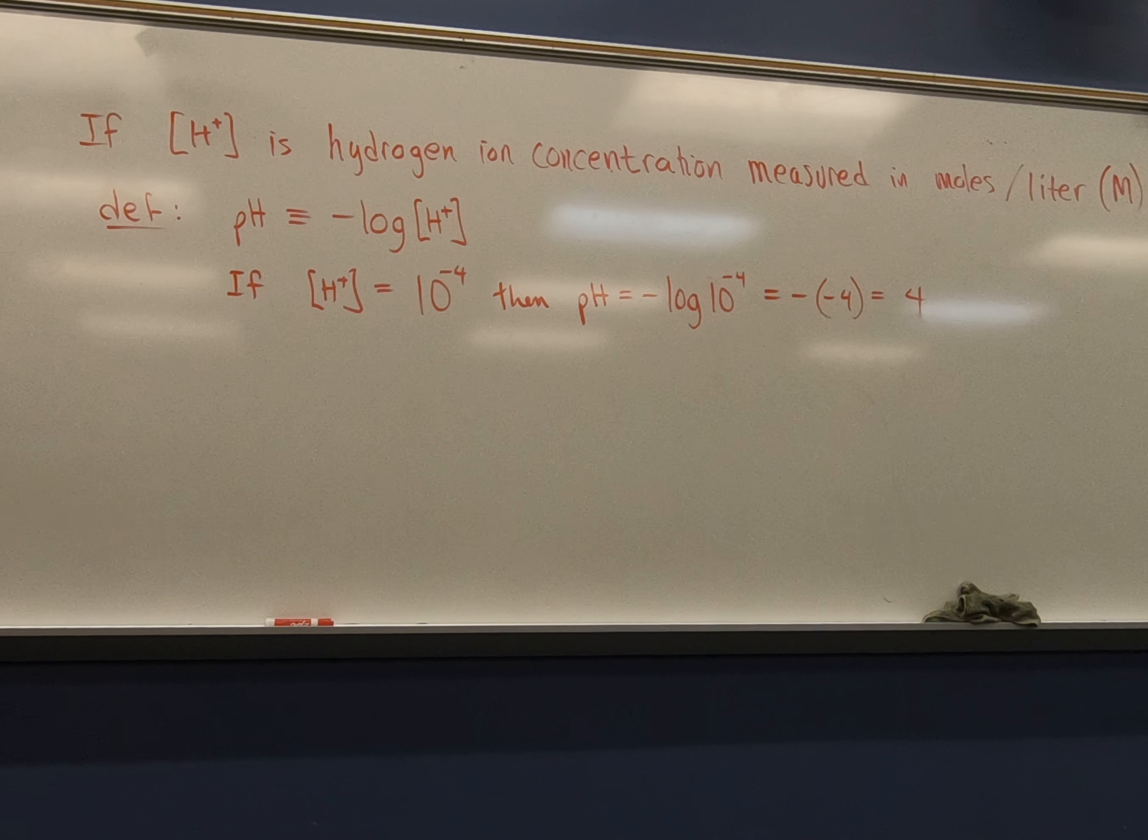So, they say solutions with a pH of seven are defined as neutral. Those with less than seven are acidic. And those with greater than seven are basic. Okay. That's all we need to say about that.